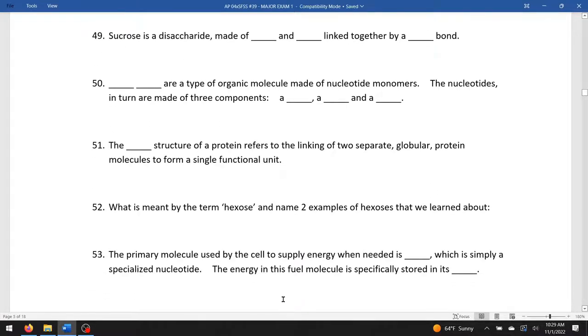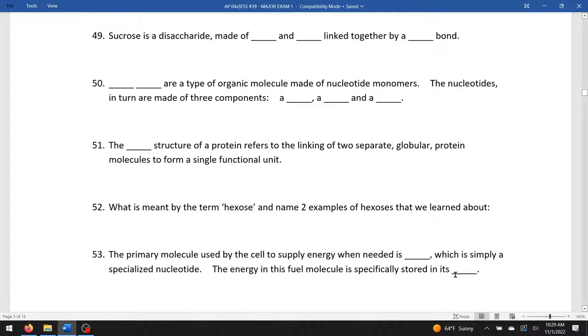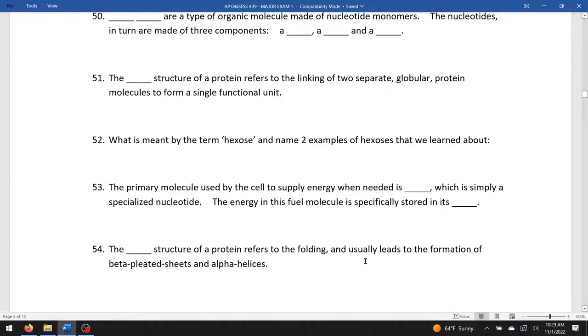The primary molecule used by the cell to supply energy when needed is ATP, which is simply a specialized nucleotide. The energy in this fuel molecule will be specifically stored in its bonds, in those high energy phosphate bonds. The blank structure refers to the folding and usually leads to the formation of beta pleated sheets and alpha helices. When you get these pleated sheets or the curlicues, we're looking at the secondary structure.